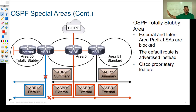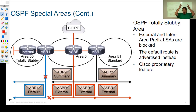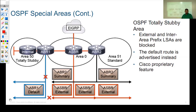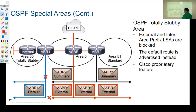The Area Border Router would say 'area 50 stub no-summary' — don't send in those summary LSAs, those type 3 and type 4 LSAs that tell you how to get to everything else in OSPF. Instead, send in a default route. The internal routers in area 50 will only have O (intra-area) routes in the routing table, and one OIA (inter-area) route — the default route pointed out to the Area Border Router. Essentially, to get to anything outside area 50 you go through the ABR anyway, so there's no reason to know that specific information. Totally stubby areas are used quite often when you only have one single ABR in that environment.